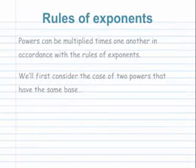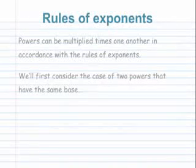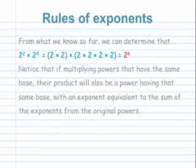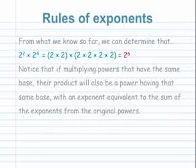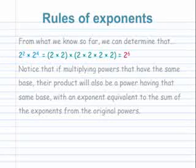Powers can be multiplied times one another in accordance with the rules of exponents. We'll first consider the case of two powers that have the same base. From what we know so far, we can determine that 2 to the power of 2 times 2 to the power of 4 equals 2 times 2 times 2 times 2 times 2 times 2 — in other words, 2 to the power of 6. Notice that if multiplying powers that have the same base, their product will also be a power having that same base, with an exponent equivalent to the sum of the exponents from the original powers.